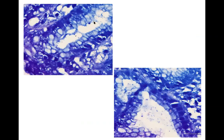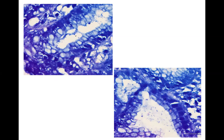If we do a modified Giemsa stain to identify H. pylori, these rod-shaped bacilli present in the gastric crypts are going to be Giemsa positive. Here we can see a number of these rod-shaped bacilli present within the crypt lumen — these are all H. pylori identified on modified Giemsa staining.